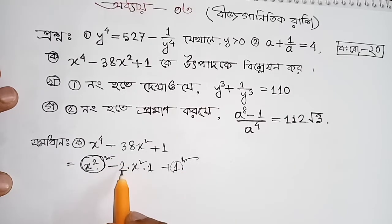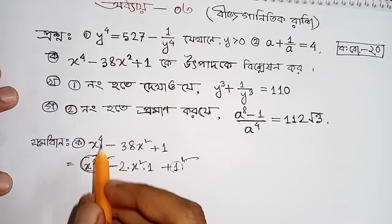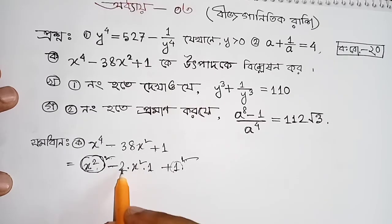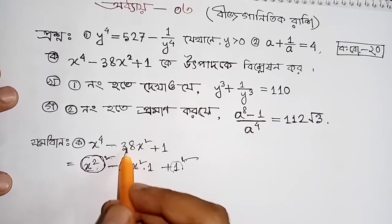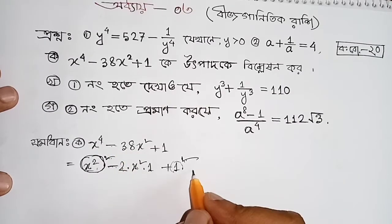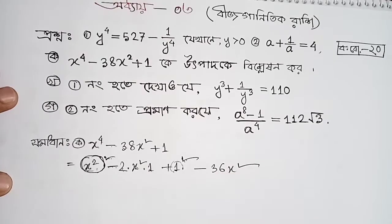1 minus is equal to minus 2. So x to the power 2 into 2, giving 4 minus 2 into x square, 2 into 1 by 2, minus 2x square. A is equal to minus 38, which gives minus 37, x square.